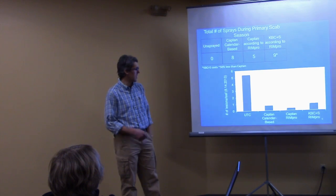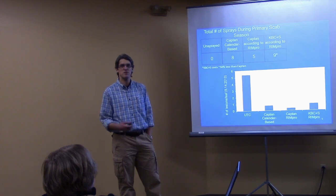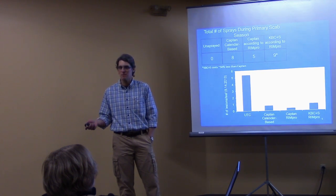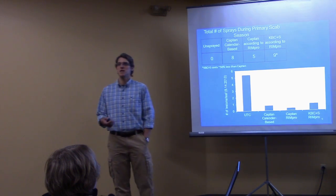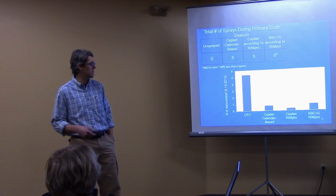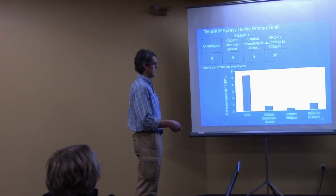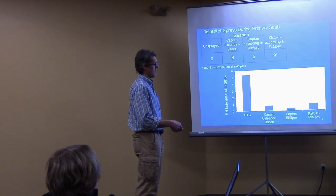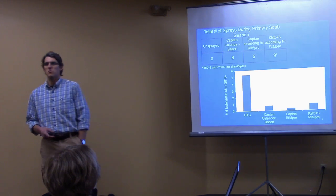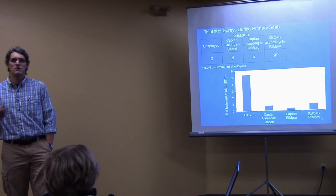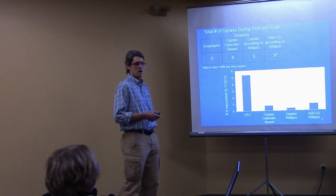The end results came out pretty well. So on our untreated check trees, so these are the trees we just let them get scab, they generally had five lesions per leaf. And so we had fairly significant scab pressure in our orchard. And then the Captan calendar-based spray, the Captan RimPro and the potassium bicarbonate were all fewer than one scab lesion per leaf. So using potassium bicarbonate with our RimPro model appears to work fairly well.